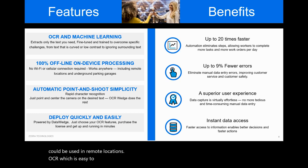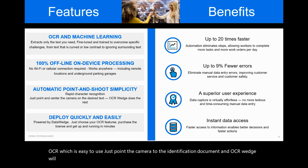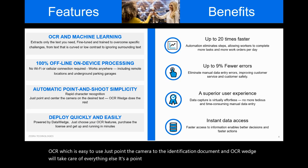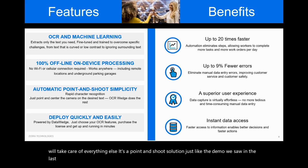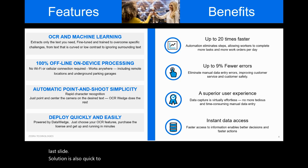OCR Wedge is easy to use — just point the camera at the identification document and OCR Wedge will take care of everything else. It's a point-and-shoot solution, just like the demo we saw. The solution is also quick to deploy as it is powered by DataWedge.